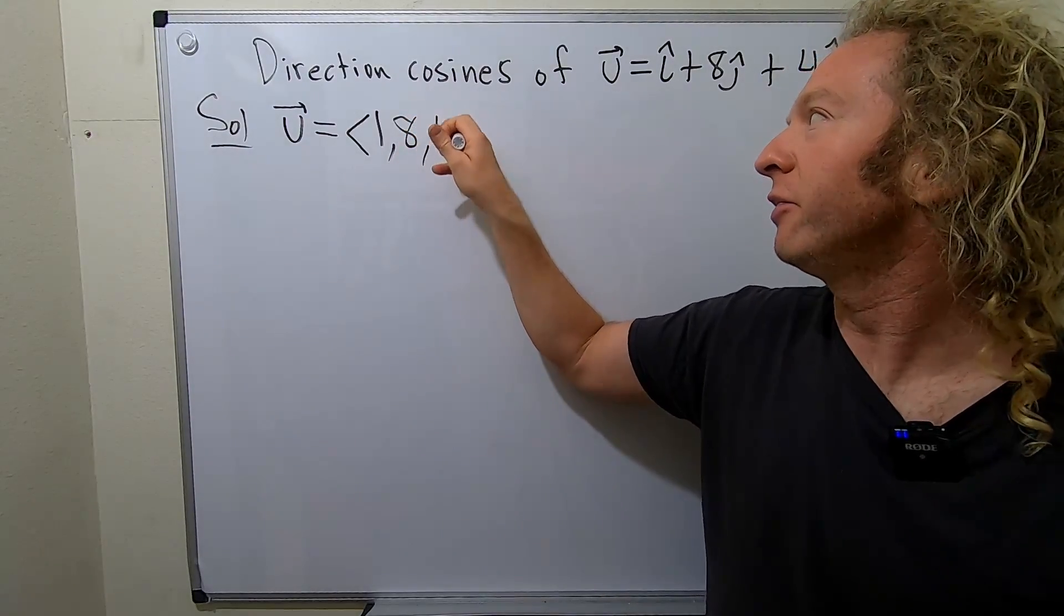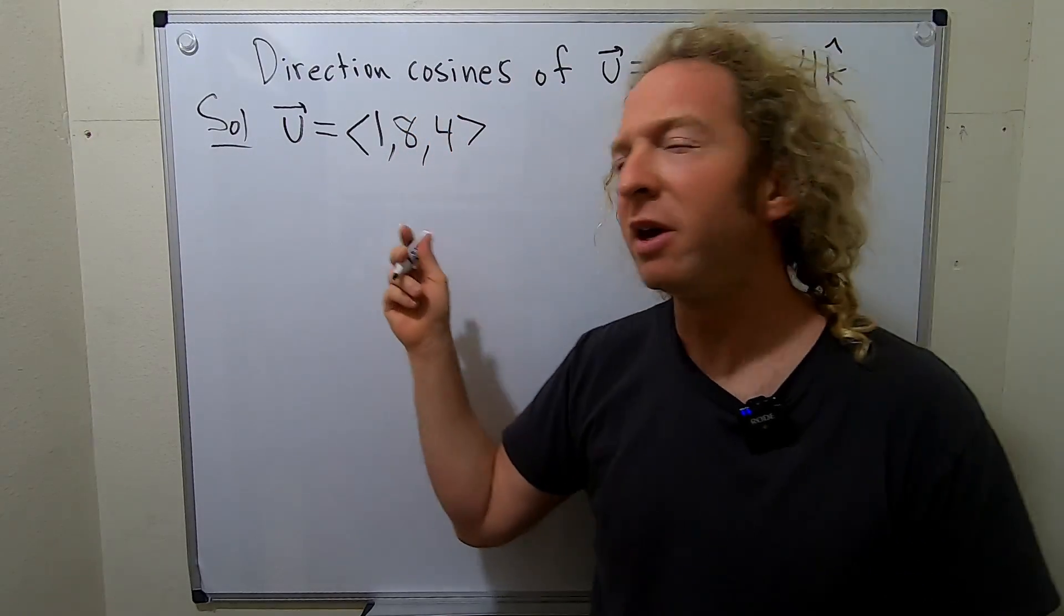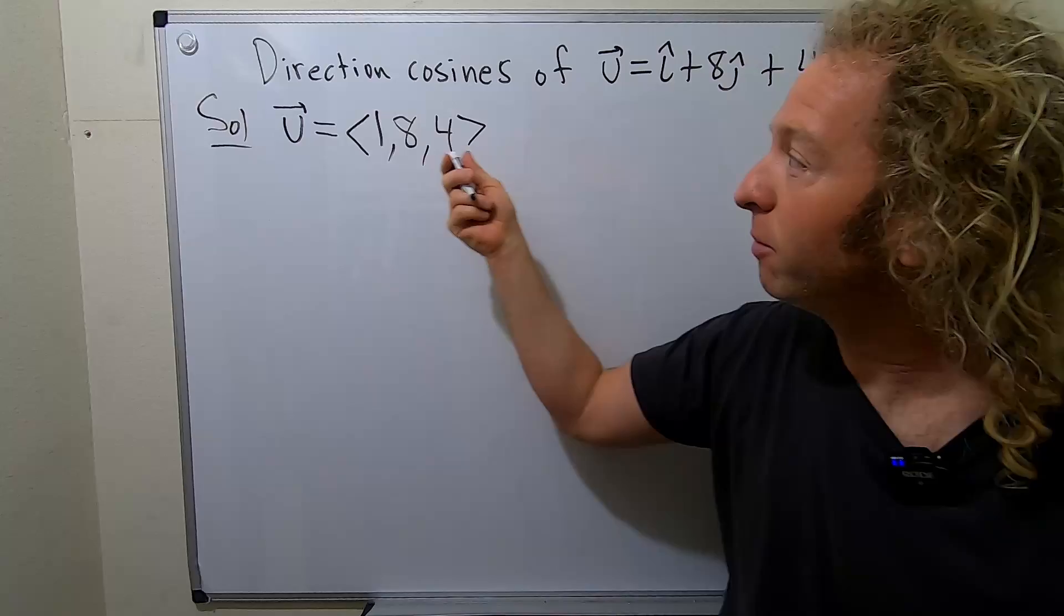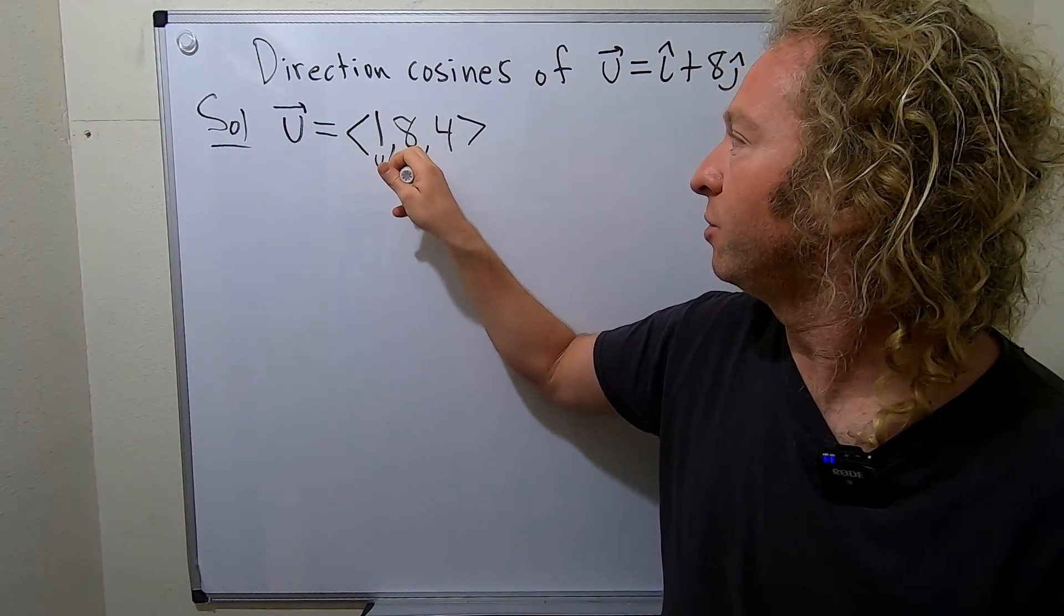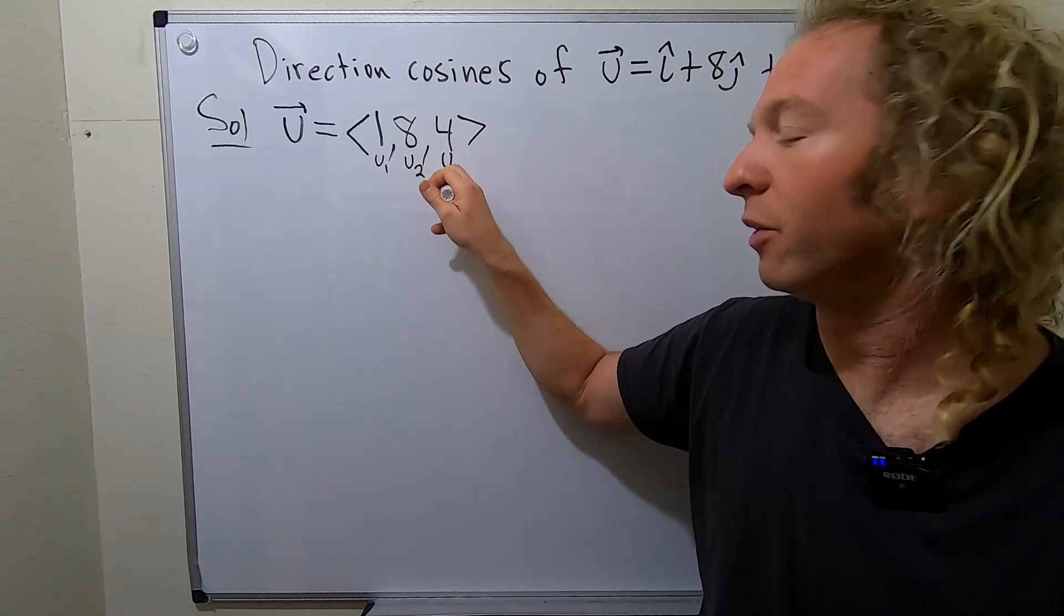So, first step, whenever you're doing these direction cosines problems, is if it's not already in component form, do this. And then this is really like your u1 here, and this is your u2, and this is your u3.